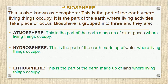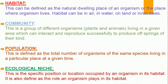The first part is the atmosphere — the part of the earth made up of air or gases where living things occupy, as some microorganisms live in the air. The second is the hydrosphere — the part of the earth made up of water where living things occupy, such as rivers, ponds, and lakes where aquatic organisms live. The third is the lithosphere — the part of the earth made up of land, where we find organisms like termites, earthworms, goats, cats, plants like maize, and humans.